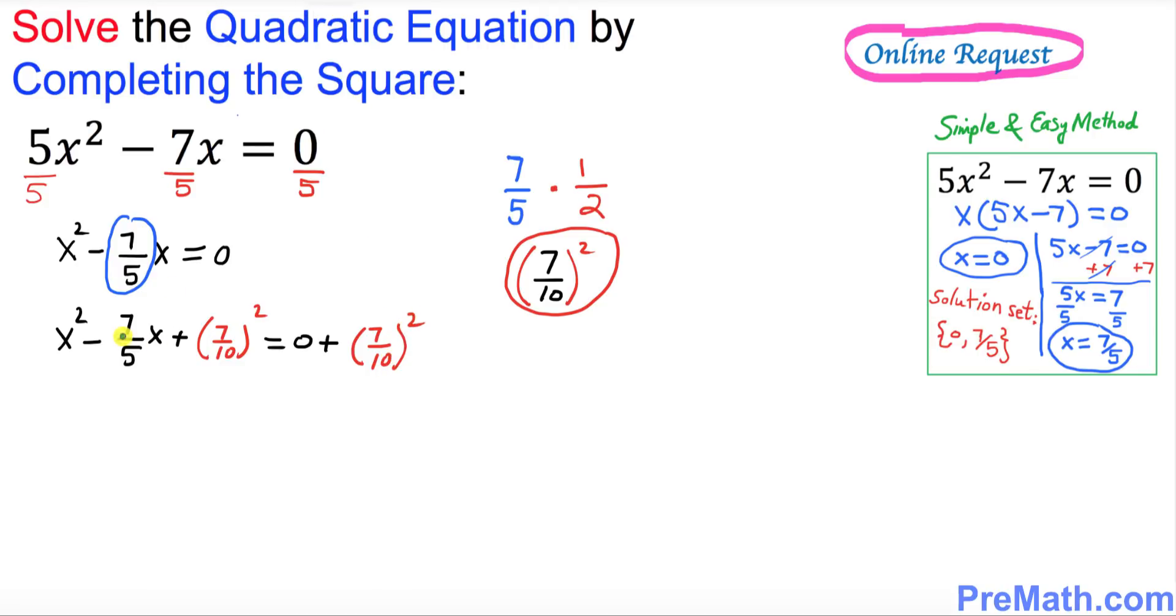If you look at the left hand side, this represents a complete square of (x - 7/10)².